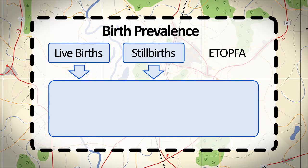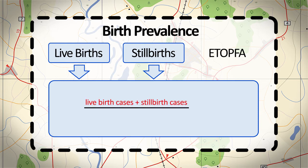Programs that have data on stillbirths and live births can calculate prevalence using a measure called birth prevalence. To determine birth prevalence, add together the cases of birth defects found among live births and stillbirths and divide by the total of live births and stillbirths, then multiply the result by 10,000. The numerator includes the number of live births and stillbirths with birth defects among the source population in a given year, and the denominator includes all live births and stillbirths in the same source population during the same year.